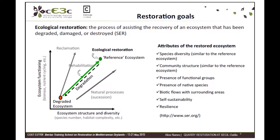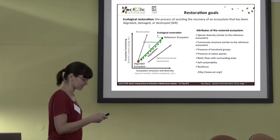Ecological restoration can be described as the process of assisting the recovery of the ecosystem. When we're talking about ecological restoration, we are talking about recovery not only of the structure and diversity of the ecosystem, but also the functioning. According to the Society for Ecological Restoration, the restored ecosystem must have other attributes, including the presence of functional groups, self-sustainability, and resilience to further disturbance.